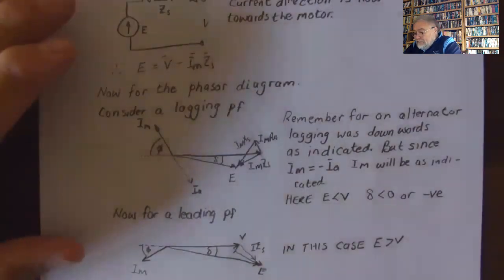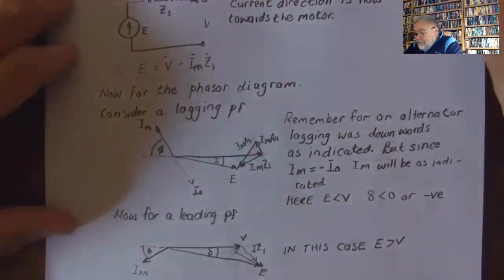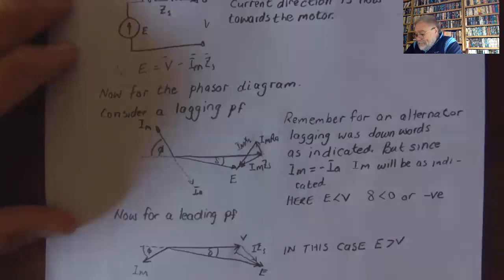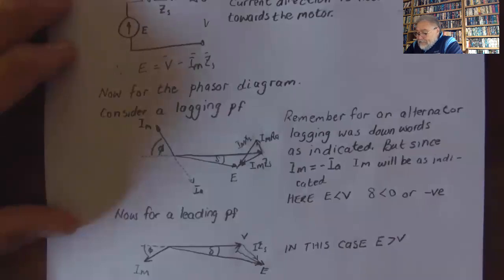If we start by drawing the phase diagram, V is our reference voltage. Then I_m R_a is always in phase with the current causing it, and I_m X_s is leading the current that is causing it. So we can look at the figure and see that E is the sum of those voltage drops.